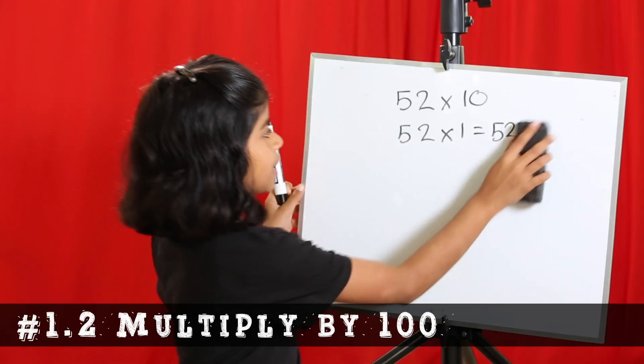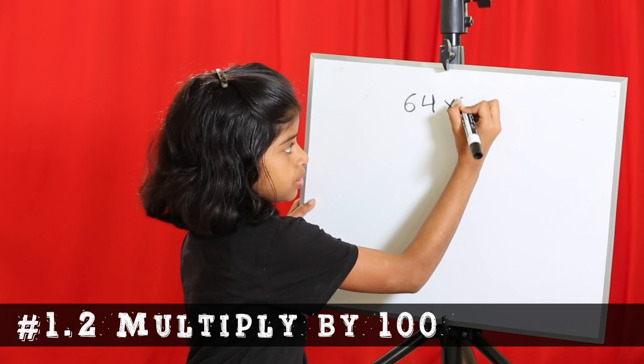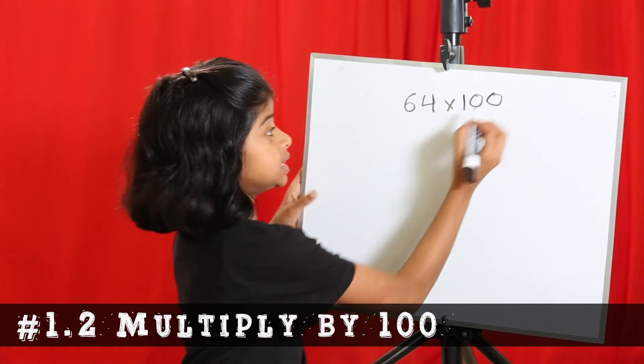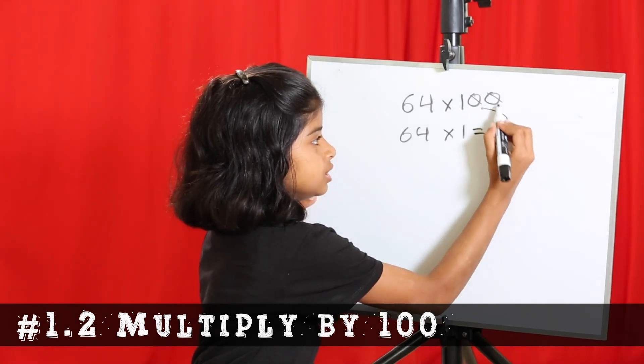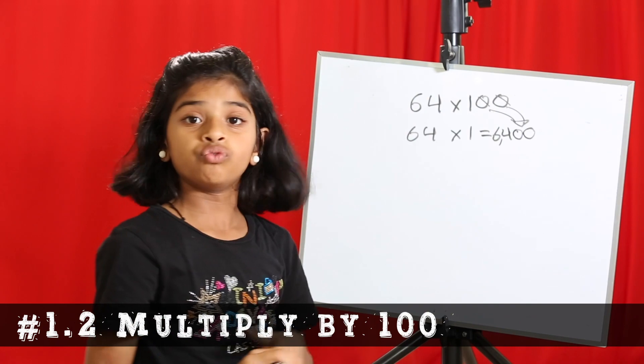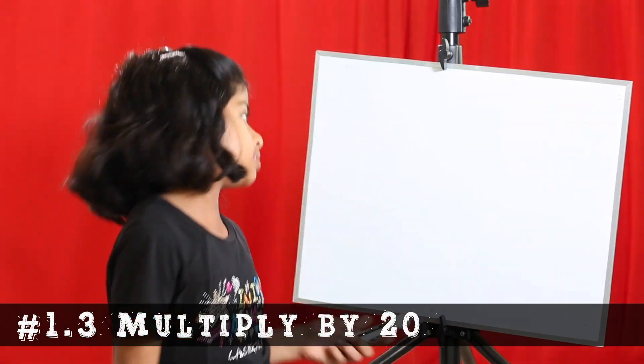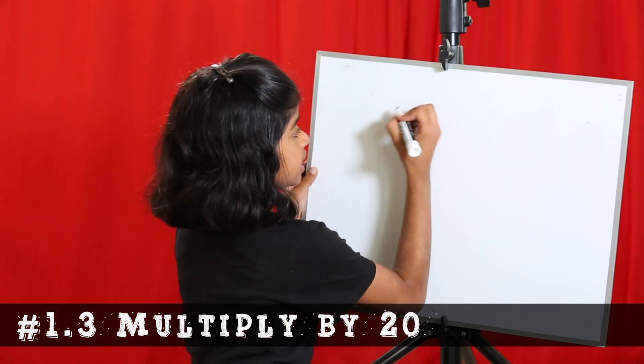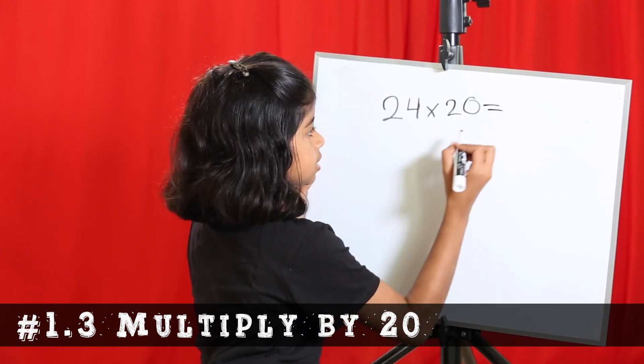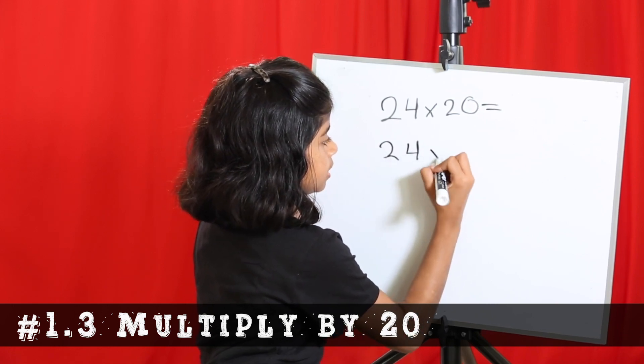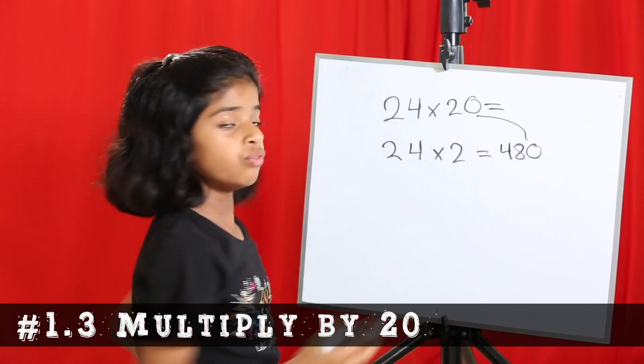But what if there is more than one 0, like 64 times 100? Then we would do basically the same thing. We would take out the 0s, do 64 times 1, which is 64, and add both of the 0s back again. So it would be 6,400. Then you can use the same technique and multiply any number that ends in a 0. Let's use 24. 24 into 20 equals 24 into 2, which is 48, and then you add the 0, and it's 480.